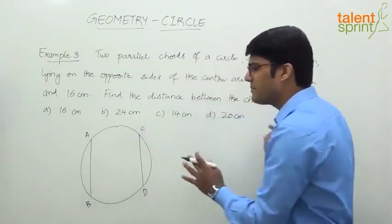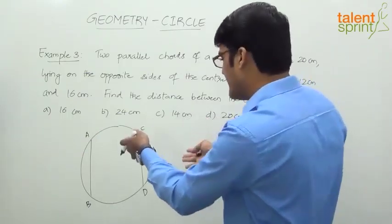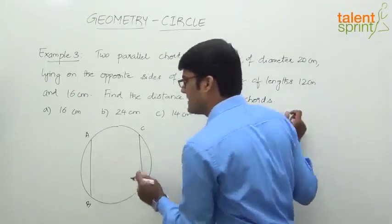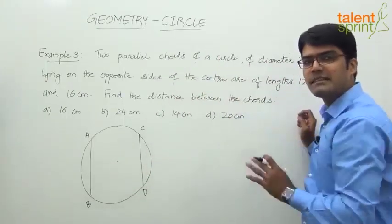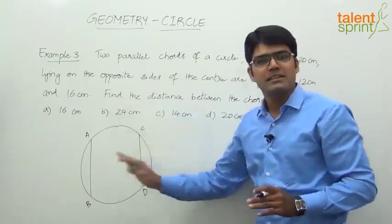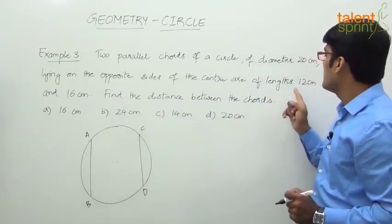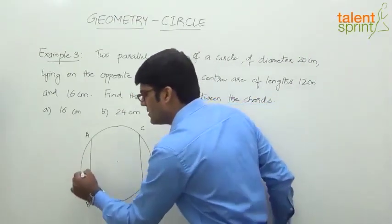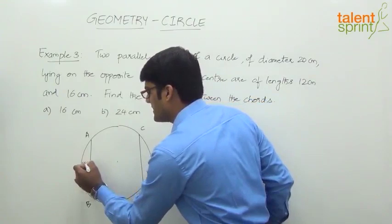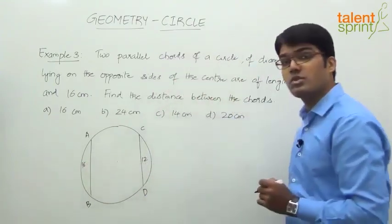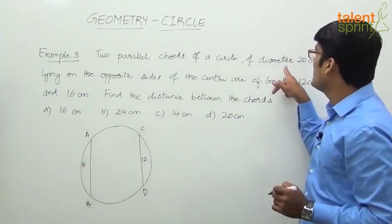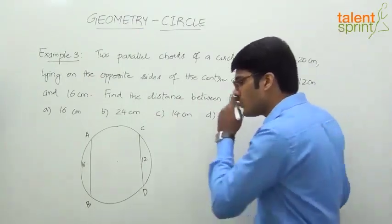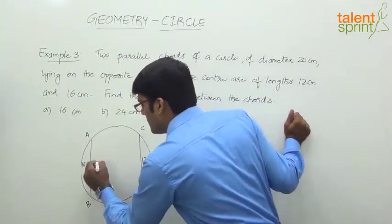AB and CD are two parallel chords lying on opposite sides of the center — one on top and the other at the bottom. The length of AB is 16 centimeters and the length of CD is 12 centimeters. We also know the diameter of the circle is 20 centimeters, which means the radius is 10 centimeters.